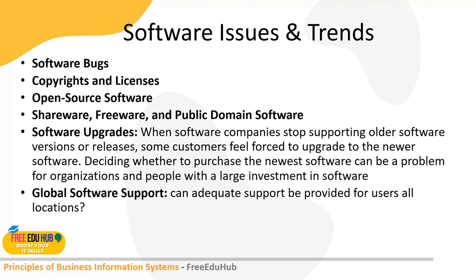Software upgrades are releases from vendors — sometimes to fix problems, other times bringing modified features with previous problems fixed. When software companies stop supporting older versions, customers feel forced to upgrade to the newer version. For example, Windows 7 has reached end of support and end of life, meaning no update patches will be released. Organizations are forced to buy the latest operating system to stay protected, since the new version comes with more features and constant Microsoft updates.